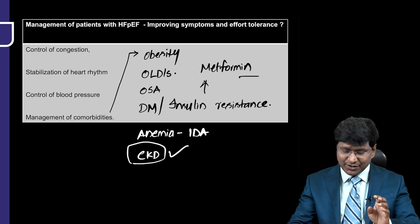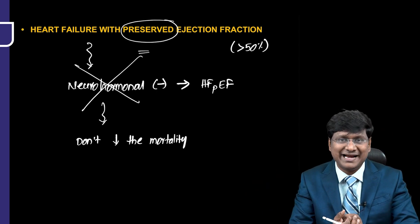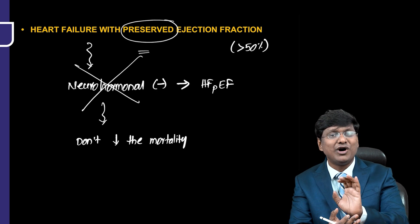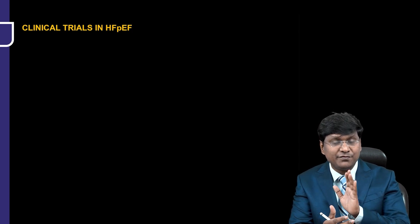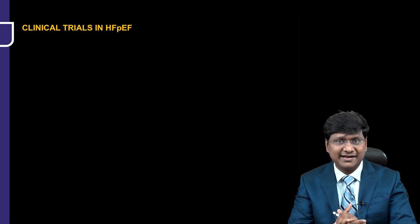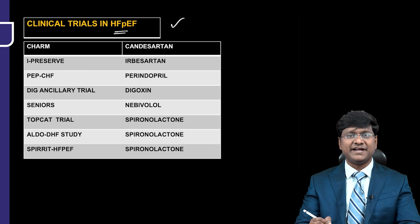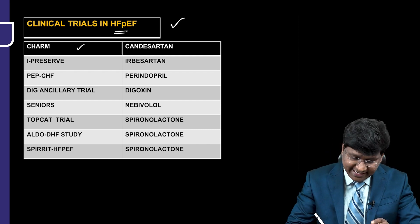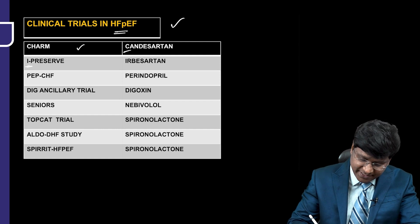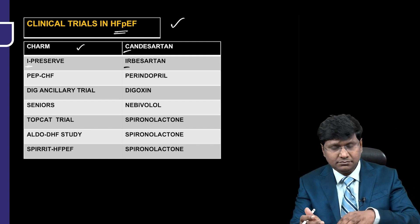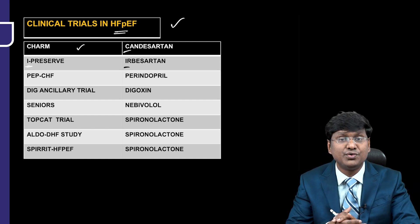Many trials have been done and found no role of neurohormonal antagonists in HFpEF. In the exam, they may give you the trial name and ask which drug was used or what the end result was. The trials done for HFpEF include: the CHARM trial, in which candesartan was used; the I-PRESERVE trial, in which irbesartan was used; and the PEP-CHF trial, in which perindopril was used to look for mortality benefit. All these trials showed no role for neurohormonal antagonists.